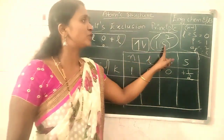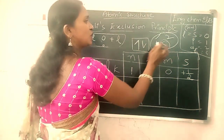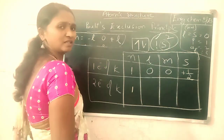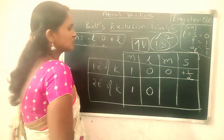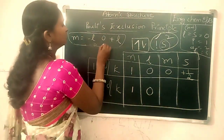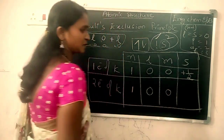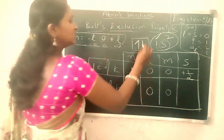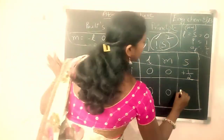Now see the second electron from 1s². The n value is the same - it is from the same 1s shell so n=1. Both electrons are in the s orbital so l=0. The magnetic quantum number m: since l=0, m is also 0. The spin quantum number for this second electron is in anticlockwise direction, so we give minus one-half.